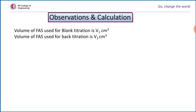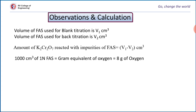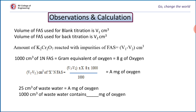Observation and Calculation: Let V1 be the volume of FAS consumed for the blank titration and V2 be the volume of FAS consumed for the back titration. The difference V1 minus V2 gives the amount of potassium dichromate that reacted with the impurities. We know that 1000 cm³ of 1N FAS is equivalent to 8 grams of oxygen. Using V1 minus V2 cm³ of FAS of concentration x, and rearranging, we calculate the amount of oxygen in milligrams. This value A milligrams of oxygen corresponds to 25 cm³ of wastewater; scaling up to 1000 cm³ gives the COD expressed as Z milligrams of oxygen per dm³.